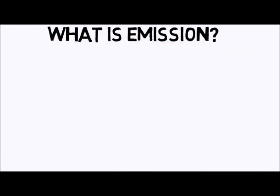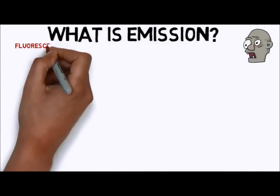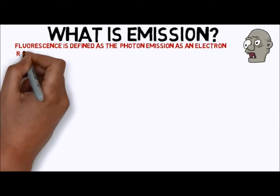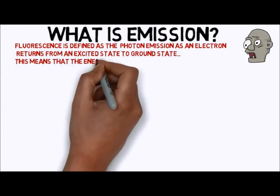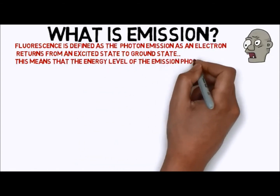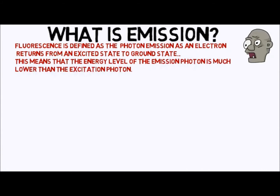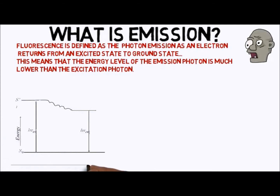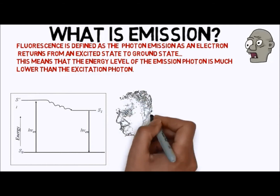Let's remind ourselves what fluorescence is. Fluorescence is defined as the photon emission as an electron returns from an excited state to ground state. The key thing to understand is that the emission wavelength in flow cytometry is always longer than the excitation. This means the energy level of the emission photon is much lower than the excitation photon. We often explain this by using a spectral display called a Jablonski diagram.